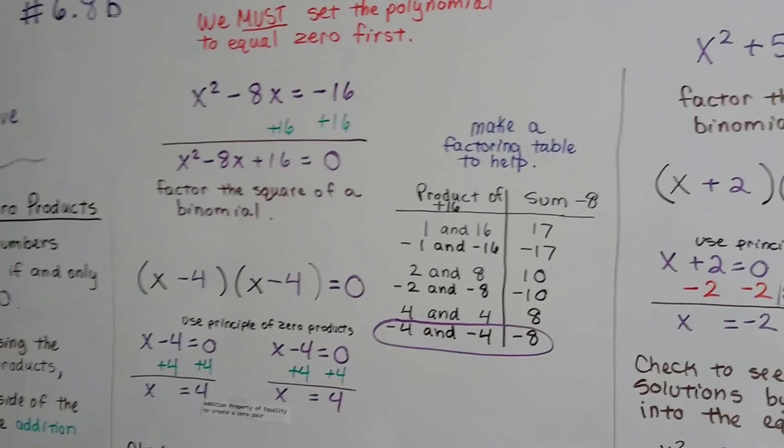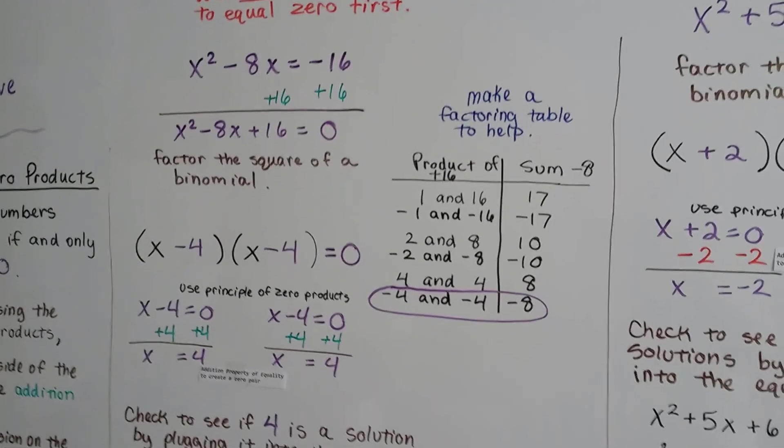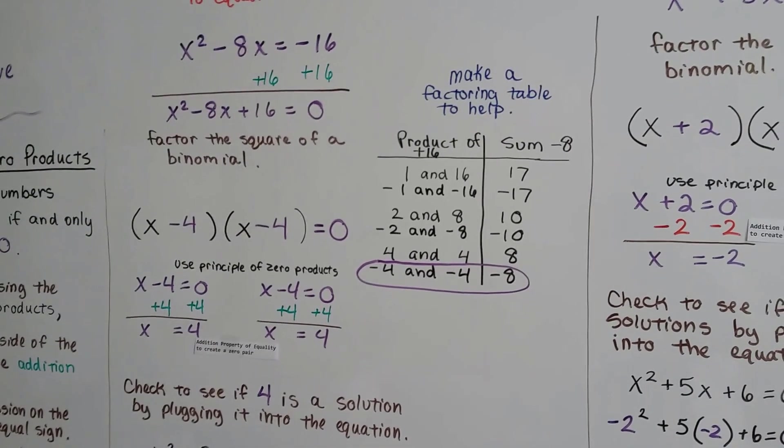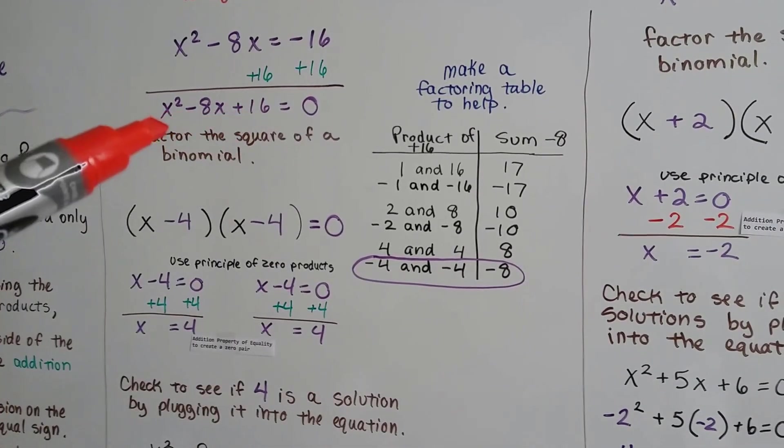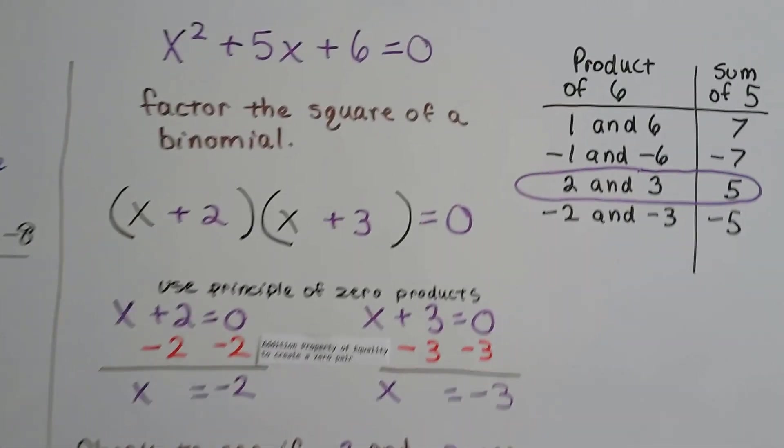So we have to make sure that we set the polynomial to equal 0 first if it doesn't already. And then in this case, when you see this x squared, you know you can make a factoring table to square a binomial. Alright, let's take a look at this one.